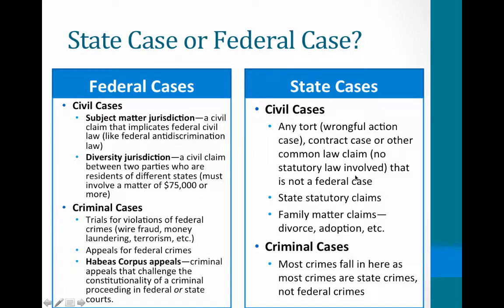Contract cases generally go to state court. State statutory claims also belong there, since different states have different statutes you can sue under. All family matter claims — divorce, adoption, marriage, name change — go through the state court system. Most crimes are also state crimes: murder and theft are typically state crimes and most never get to federal court. The bulk of legal action falls into the state court systems.